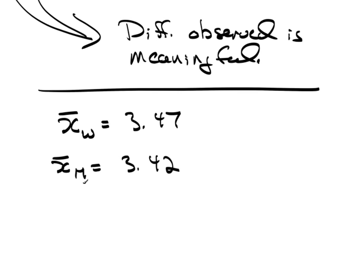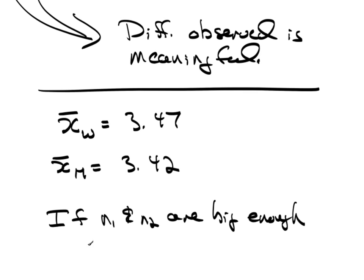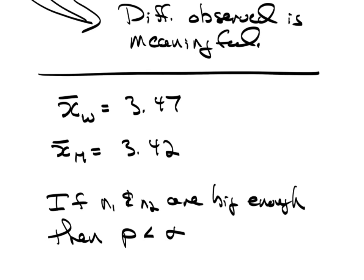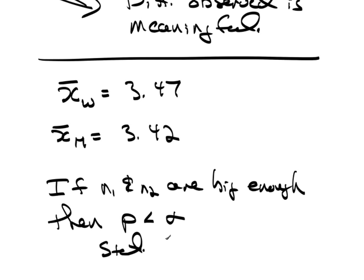Now numerically, the women's GPA is clearly greater than the men's. If the sample size is big enough, then the p-value will be smaller than alpha. I don't care what you set alpha at — you can always get a big enough sample size that, no matter how small alpha is, you can get a statistical difference. So this would be statistical significance.